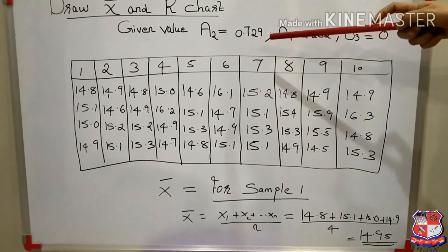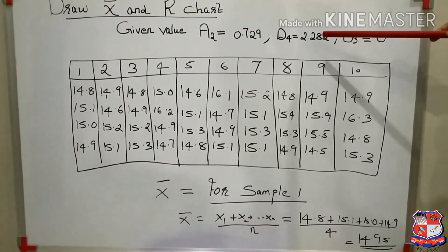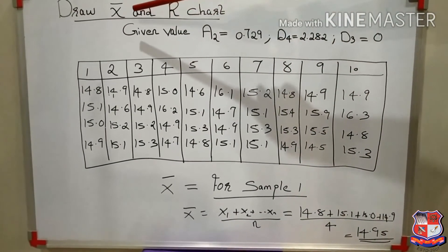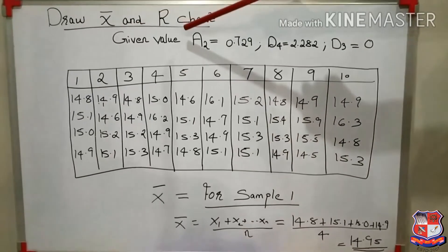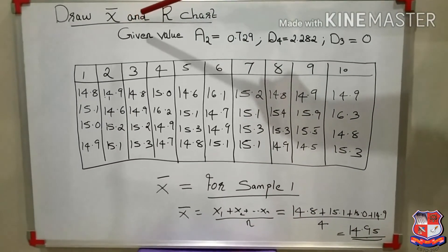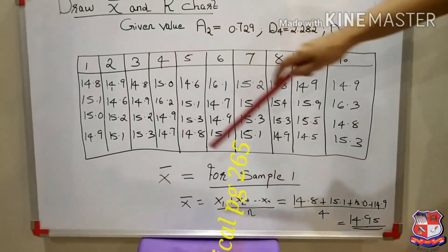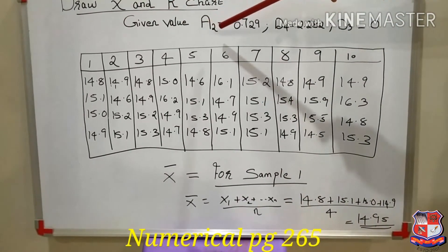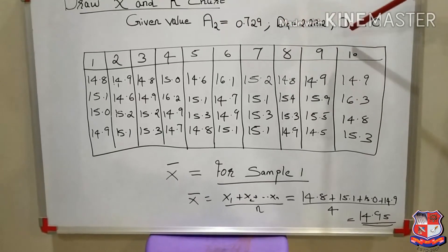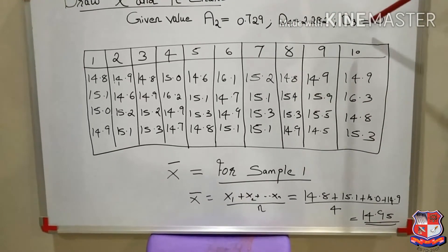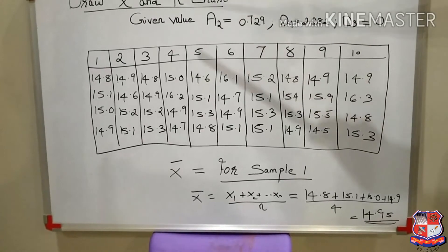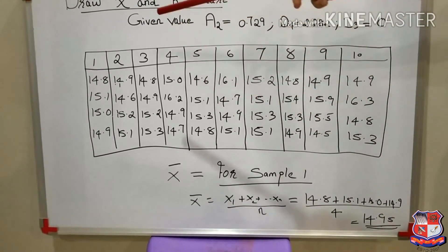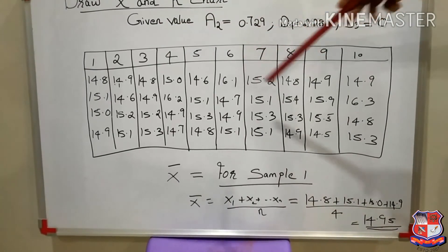This numerical is from the textbook, page number 265. You have to find x̄ and R, and then draw the x̄ chart and R chart based on the given data. The given data includes samples 1 through 10, and the constant values A2, D4, and D3 are also provided.